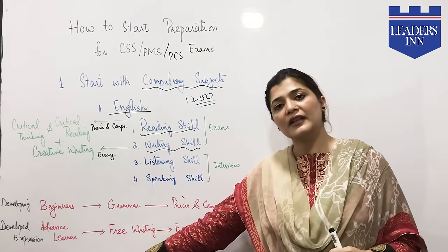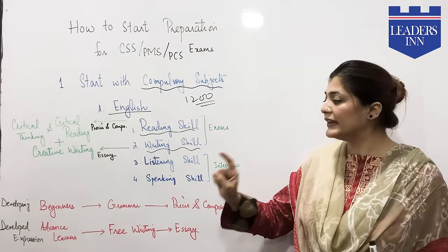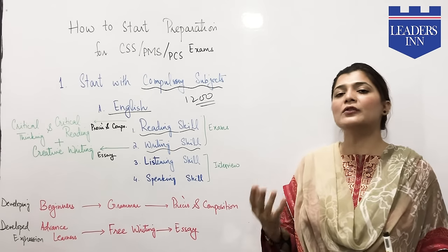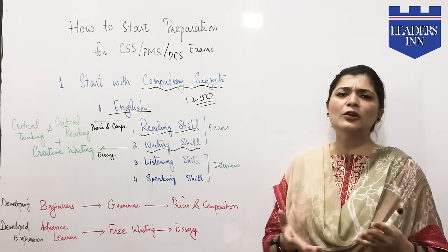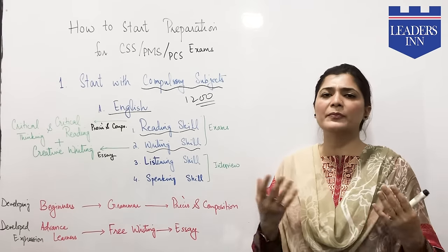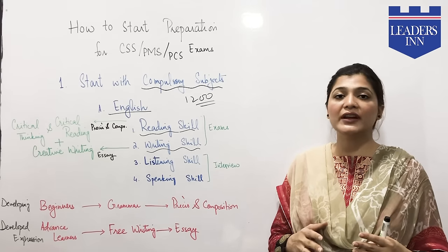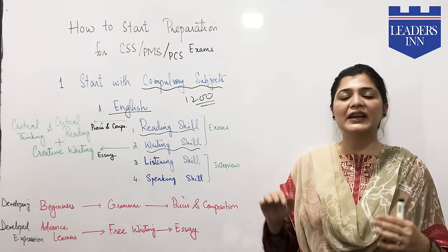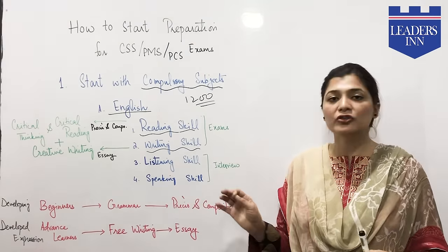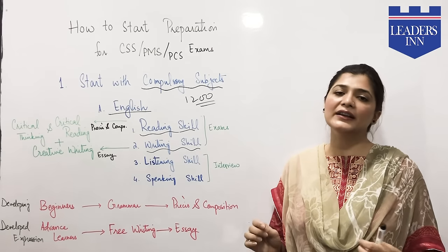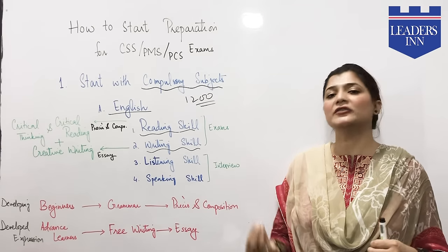The advanced learner is a student whose expression has developed — someone who can write. If you ask them to sit and write two pages, they will write two pages. You can see that they use appropriate vocabulary, their tenses are good, and their punctuation is good. The key difference is that the beginner struggles with writing while the advanced learner is fluent in written expression.